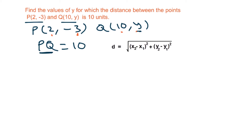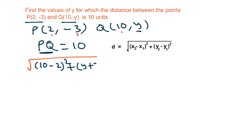So PQ = square root of (10 minus 2) whole square plus (y minus (minus 3)) whole square = square root of (10 minus 2) whole square plus (y plus 3) whole square, and this equals 10. Now we square both sides.